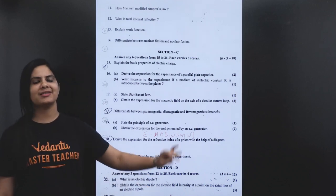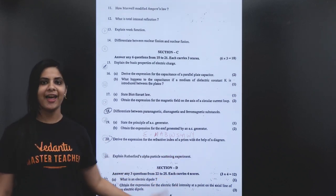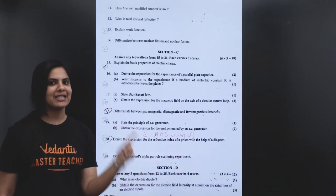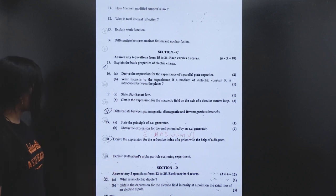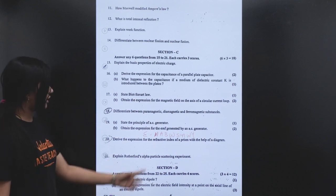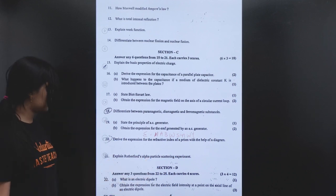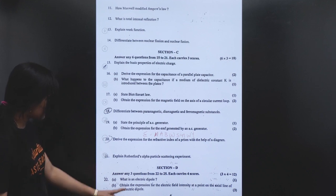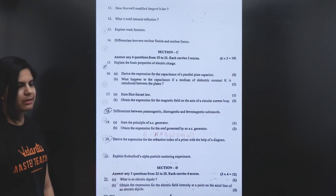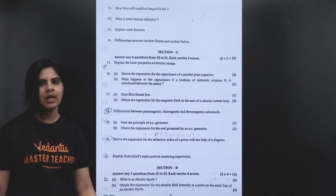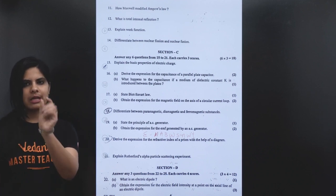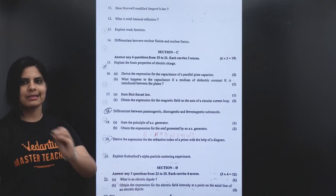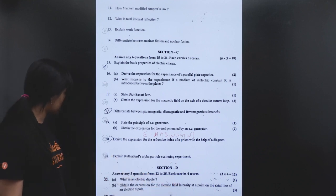Derive the expression for refractive index of a prism with the help of a diagram. Next, explain Rutherford's alpha scattering experiment. Next, what is an electric dipole? An electric dipole consists of equal and opposite charges separated at a small distance.